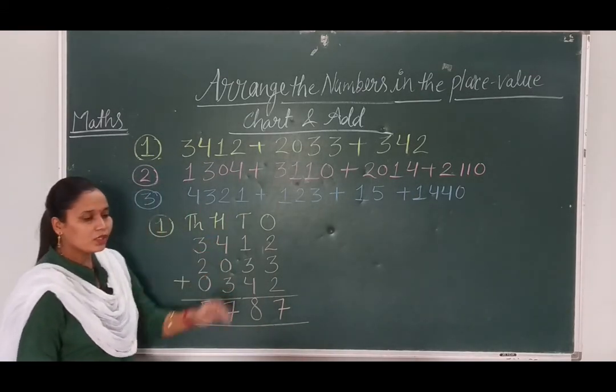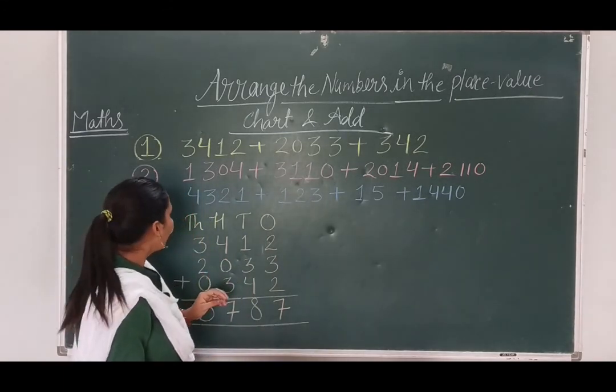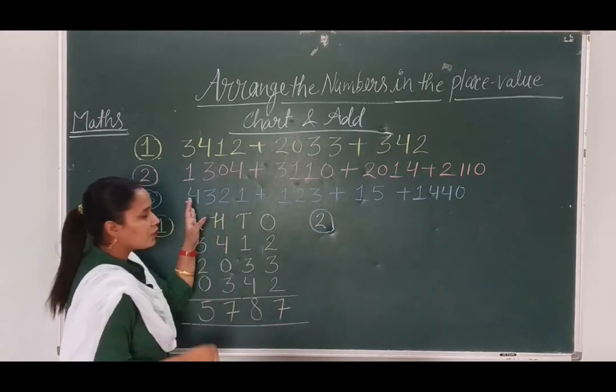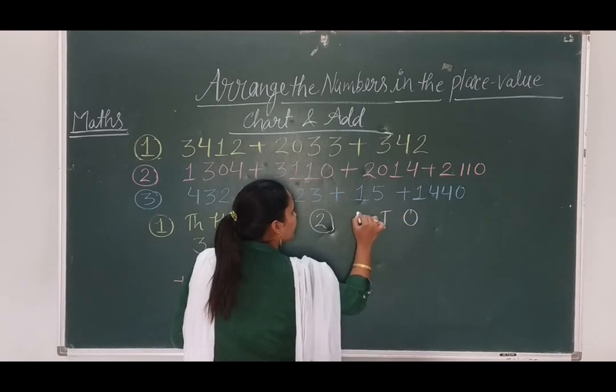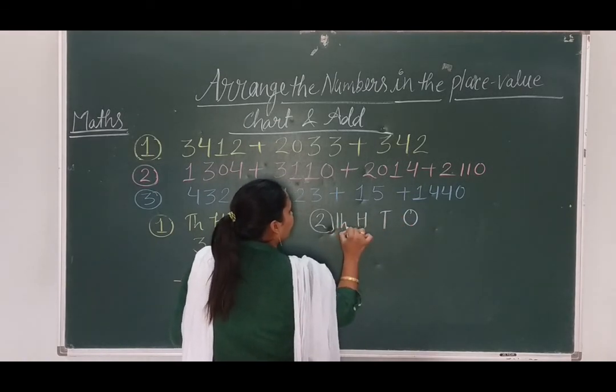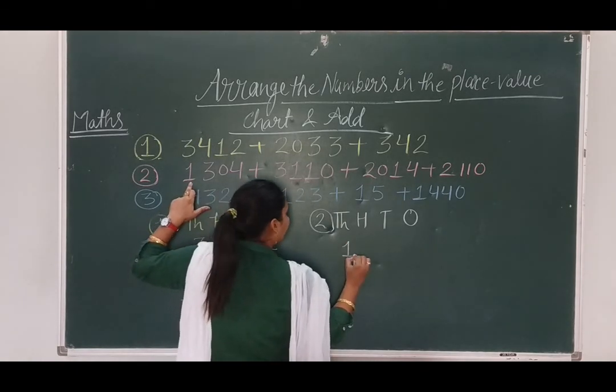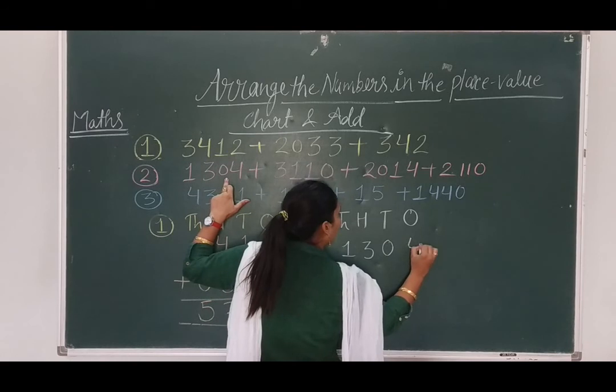Same way, we will solve another question also. Question number 2. Same. First, we have to write place value. Ones, tens, hundreds, thousands. 1304.